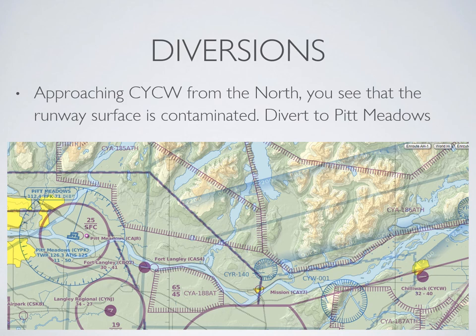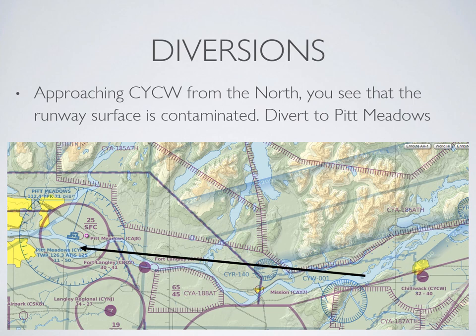Here's an example of a diversion you might get on a flight test. You're north of Chilliwack Airport, having just done exercises in the practice area, and your examiner says the runway surface is contaminated — divert to Pitt Meadows. At that point you ask: where am I? Where am I going? How am I going to get there? Who do I call — flight services, what's their frequency, and what do I tell them? You start en route, and before the examiner calls off the exercise, they'll want an updated ETA and confirmation that you have enough fuel to make destination. One nice feature of this diversion is the river — if you follow it at a heading of roughly 250 to 260, it will take you to your destination. On the private pilot flight test, they like to see you using landmarks such as roads and rivers to help navigate.